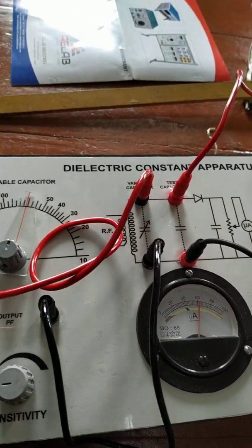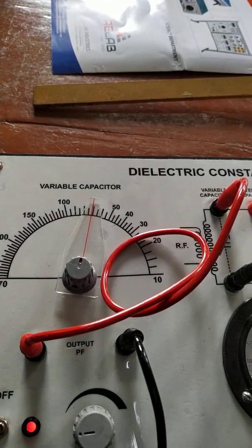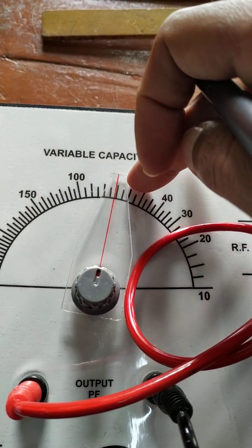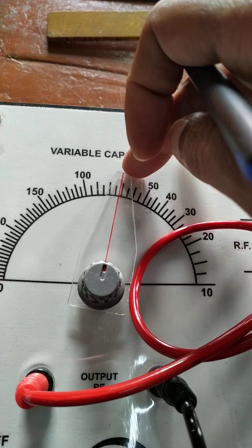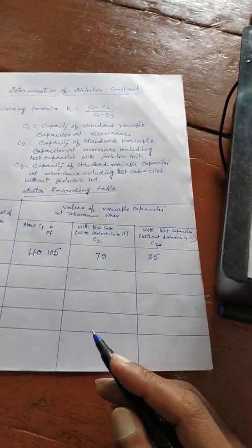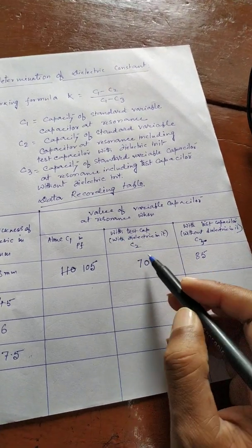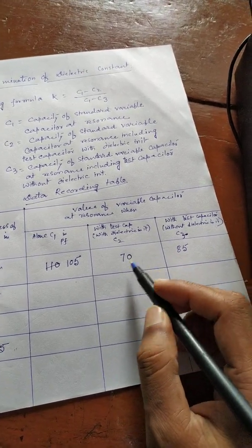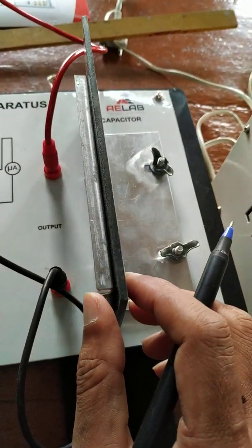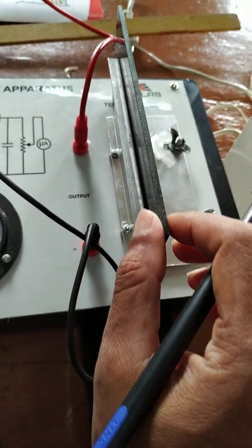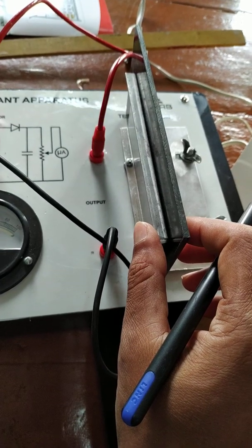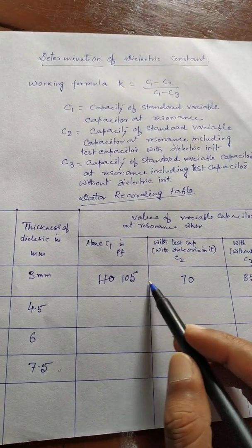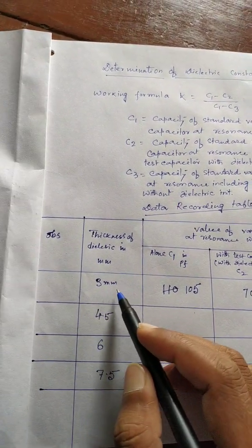This is the maximum reflection. This is 50, this is 60, and this is 70. So this is the value of C2 — the test capacitor with dielectric in it — and this is 70 picofarads. The thickness of the dielectric material is 3 mm, so we write the data in the position for 3 mm.